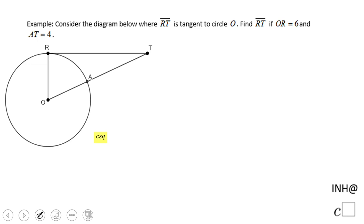Welcome or welcome back. I need help at C-square. In this example we need to find RT. RT is a segment that is tangent to the circle O.